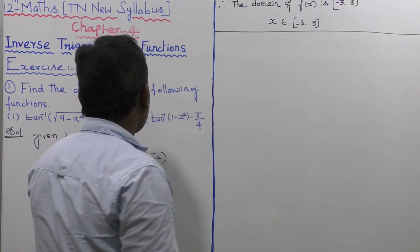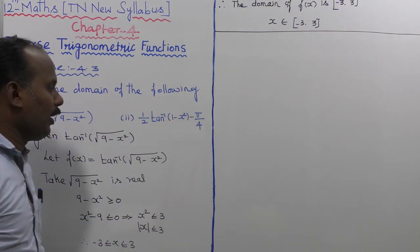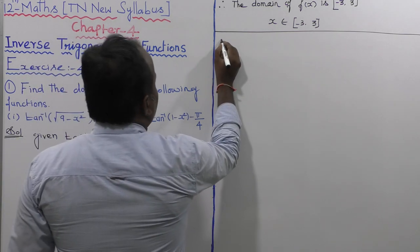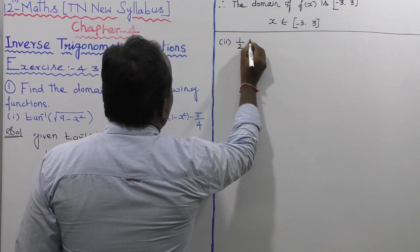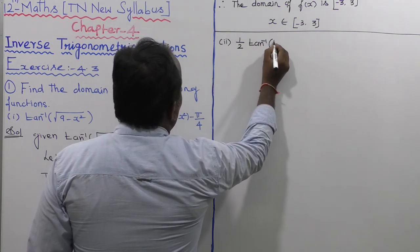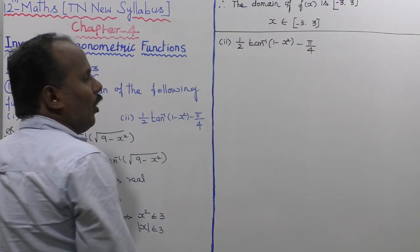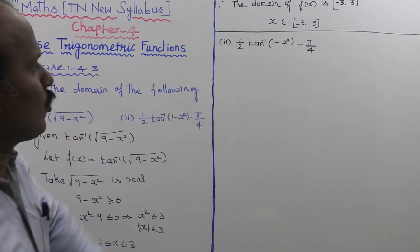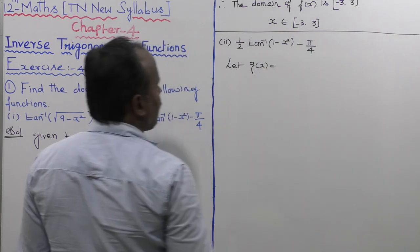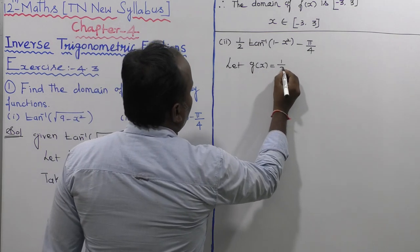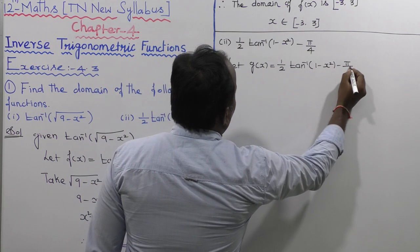Now moving to the second subdivision. This function is 1 by 2 into tan inverse of 1 minus x squared, minus pi by 4. Let us consider this as g of x. So g of x is equal to 1 by 2 into tan inverse of 1 minus x squared, minus pi by 4.